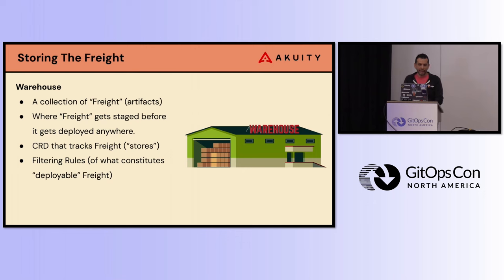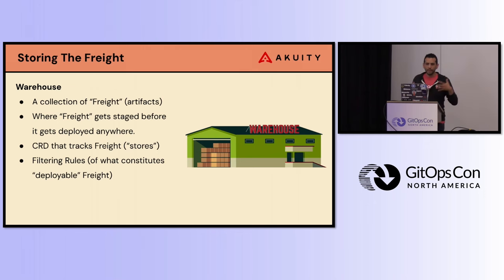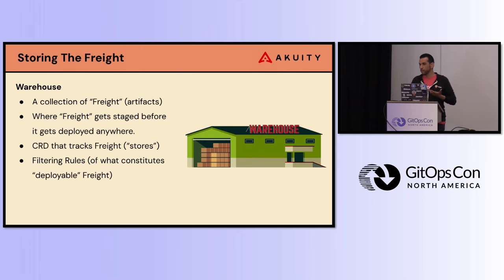The Warehouse does a few key things. It keeps track of freight and what is promotable, using filtering rules — based on specific filtering rules, I want to mark something as able to be deployed or not. So we have Freight, which is a collection of artifacts that need to be promoted together, and we have a Warehouse where that freight gets stored or staged with filtering rules to determine what gets promoted.